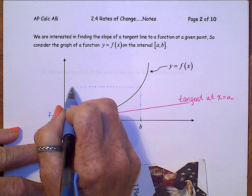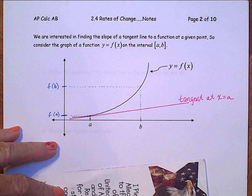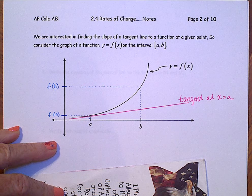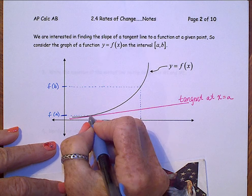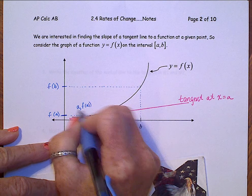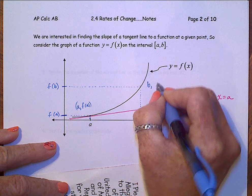Take that over to the y-axis. Take that over to the x-axis, that's f of B. Now the coordinates then of this point A right here is A comma f of A, and the coordinates of B, B comma f of B.